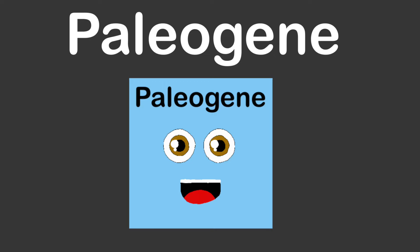I'm the Paleogene time period, the earliest in the Cenozoic Era. I started about 66 million years ago and ended 23.03 million years ago. I ended the Cretaceous-Paleogene extinction event, which ended the preceding Cretaceous time period. P-A-L-E-O-G-E-N-E is how you spell Paleogene.